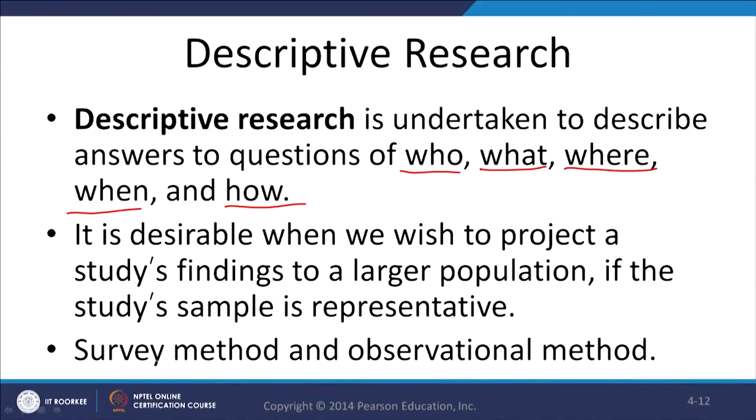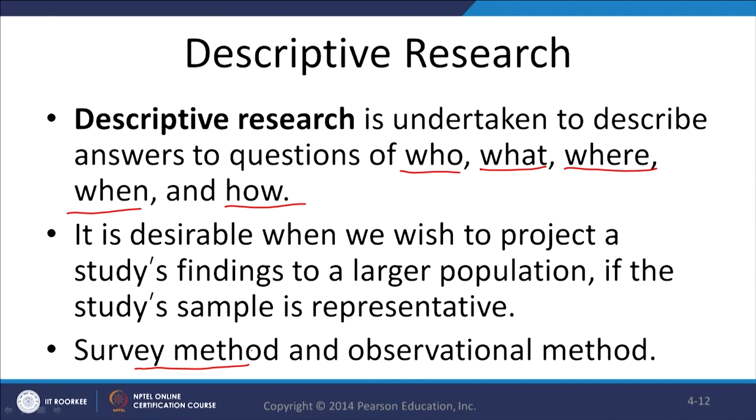Descriptive research consists of two methods. The first is the survey method, where you create a survey instrument to take opinions and try to measure and infer something. Survey methods are very popular — you ask questions to people, their answers are recorded, and this may be done physically, online, or telephonically. Results are collected and then analyzed.